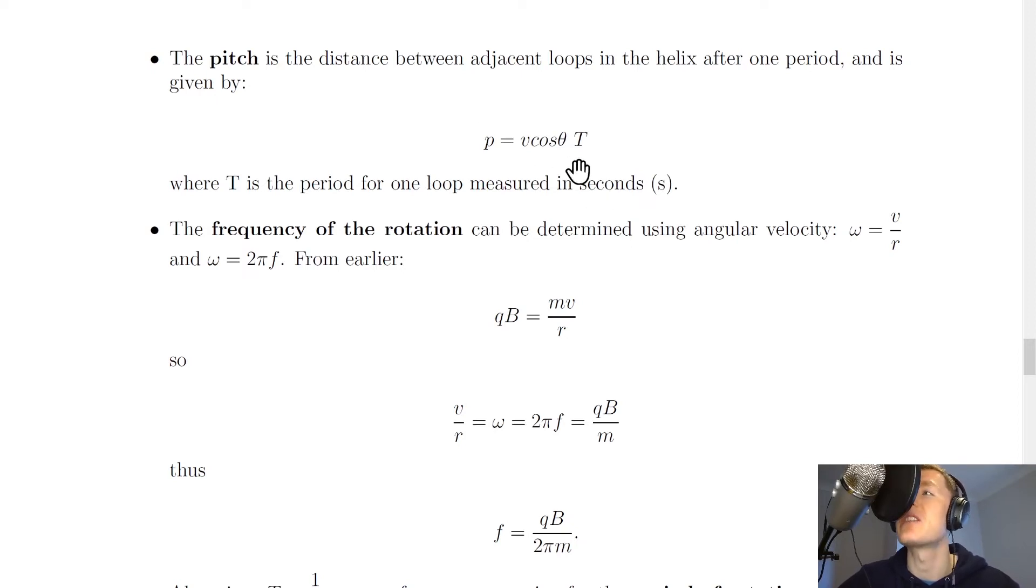And in a sense, this is just a speed distance time equation, where p is our distance, v cos theta is our component of the velocity, and period T is our time.